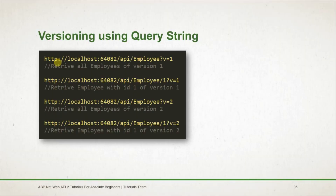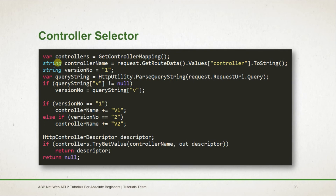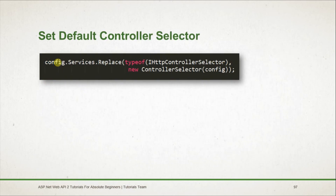For creating versioning using the query string, we need to create a custom controller selector class which extends from the DefaultHttpControllerSelector. Within that we need to override the SelectController method, in which we retrieve the list of controllers using GetControllerMapping and the name of the controller using the request object, and check whether the query string exists or not. Based on the version number we decide the controller name. Using controllers.TryGetValue we specify the controller name we want to retrieve. After creating the custom controller, we update it in the config file using config.Services.Replace, replacing IHttpControllerSelector with our new controller selector object. Thanks for watching, have a nice day.